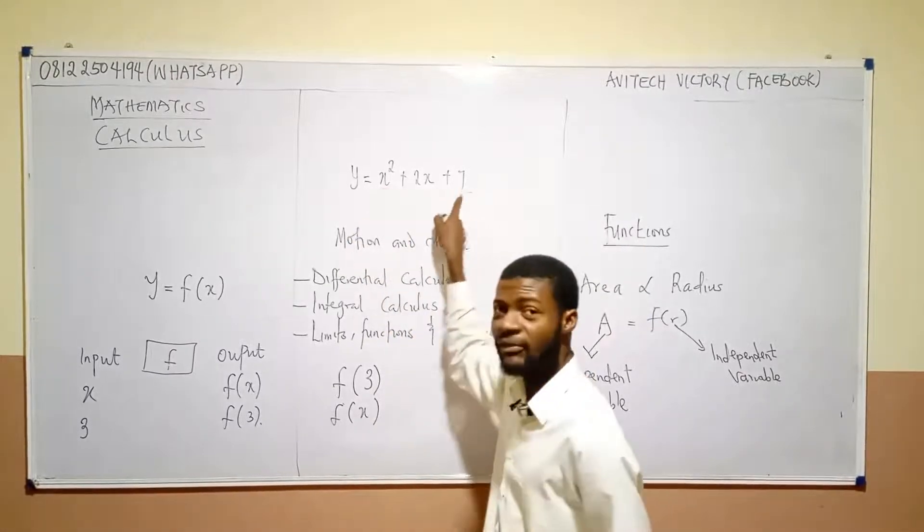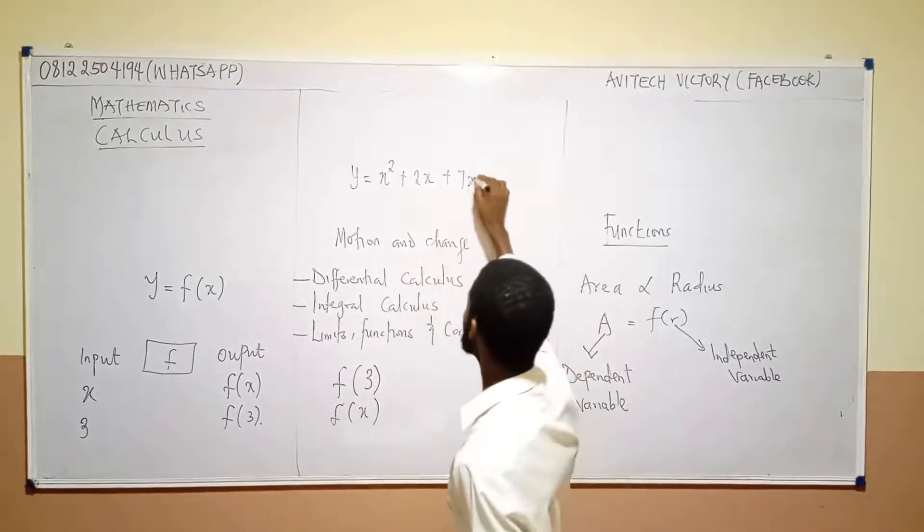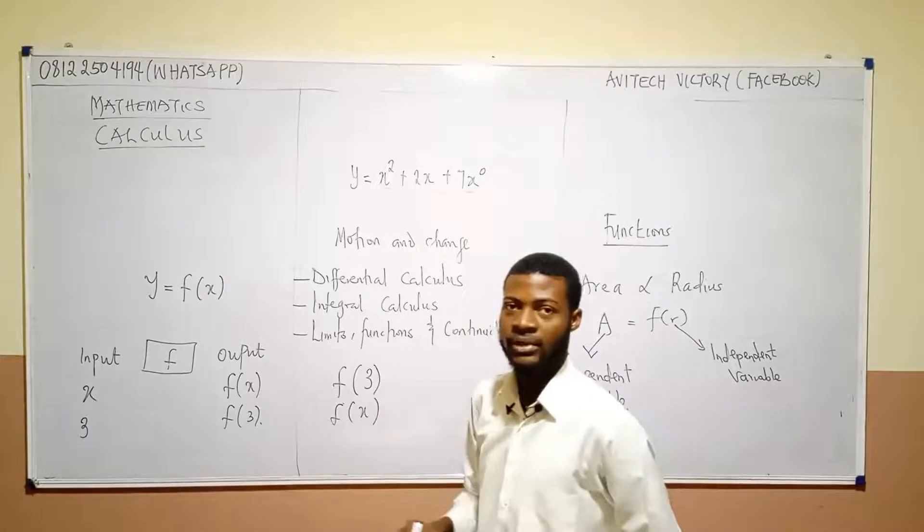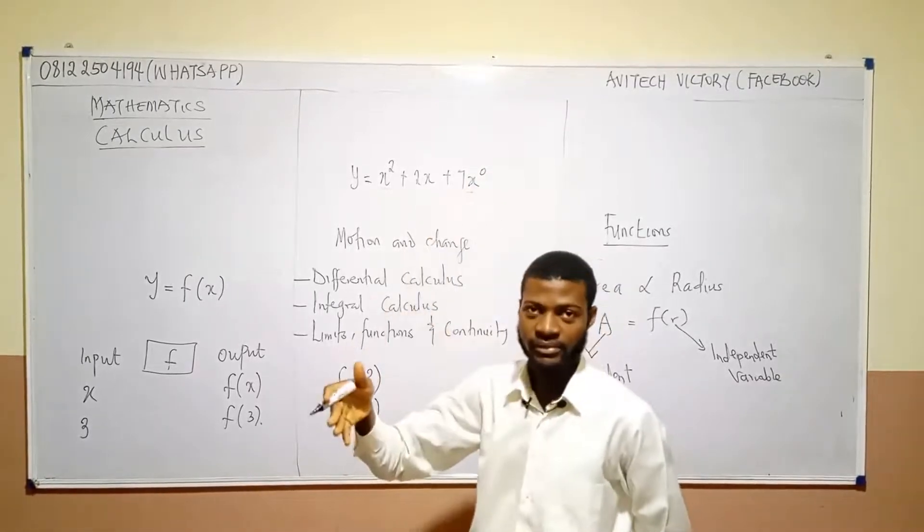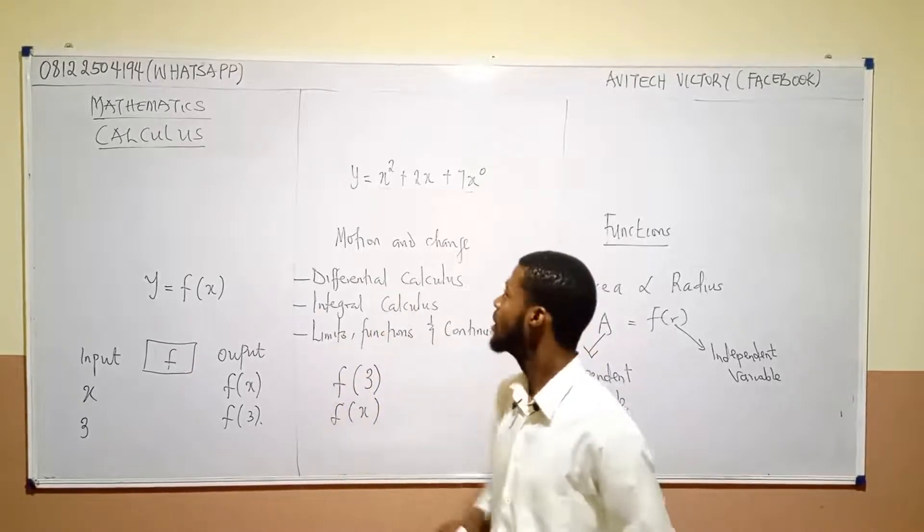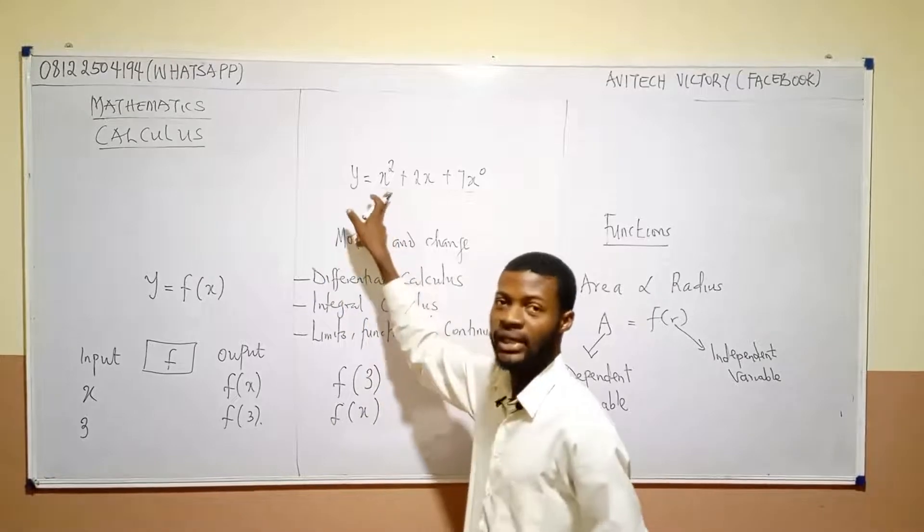Mind you, even 7 is defined by x. And what would 7 be? x to the power of 0. Remember that any to the power of 0 is 1. So, 1 times 7 is still 7. So, the value does not change. So, y is what? Dependent. x is what? Independent. Okay.